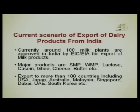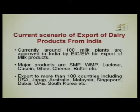Currently, around 100 milk plants are approved by EIC/EIA for export of milk products. The major products exported include SMP (skim milk powder), WMP, lactose, casein, ghee, cheese, and butter.